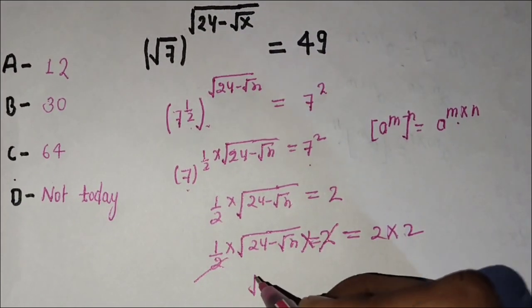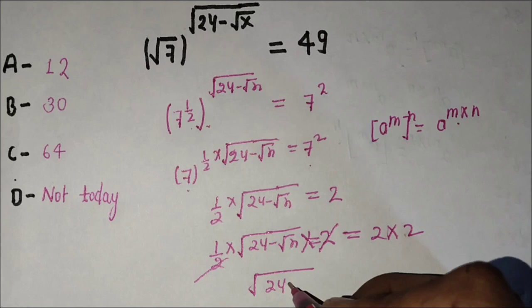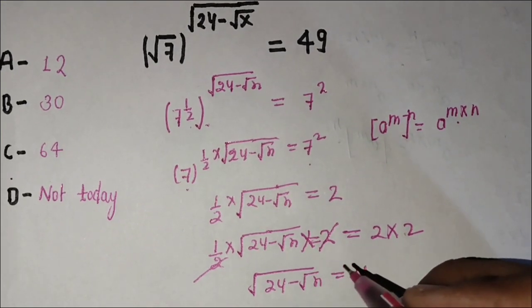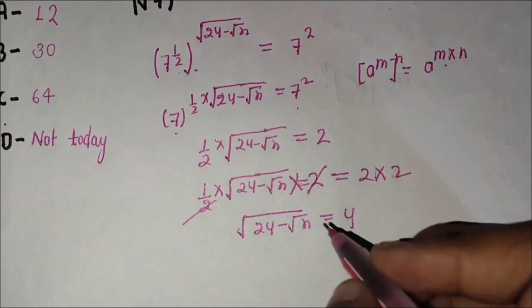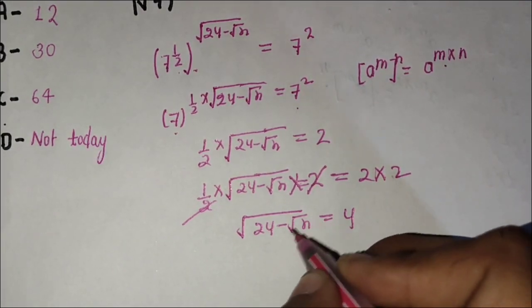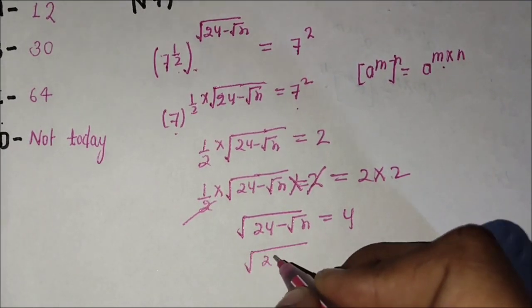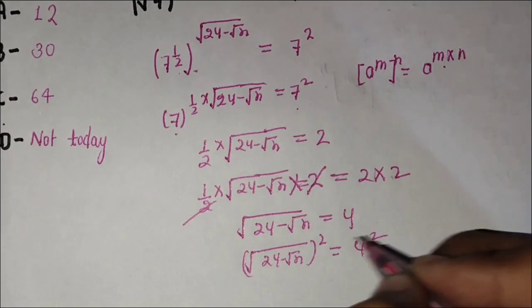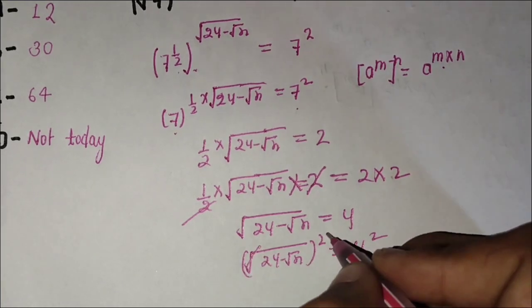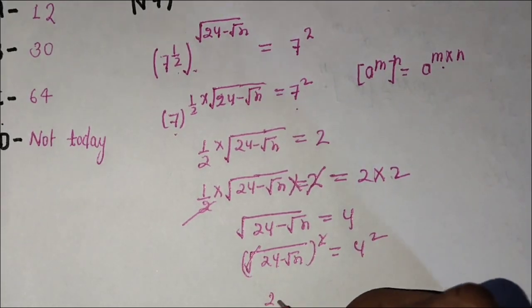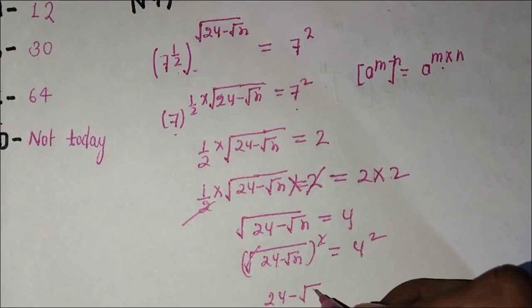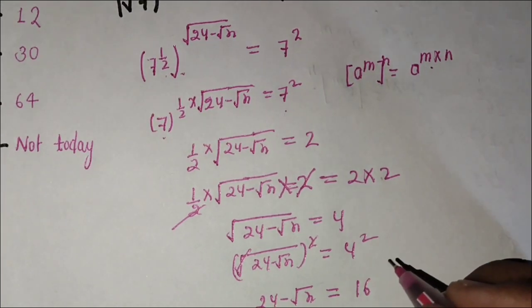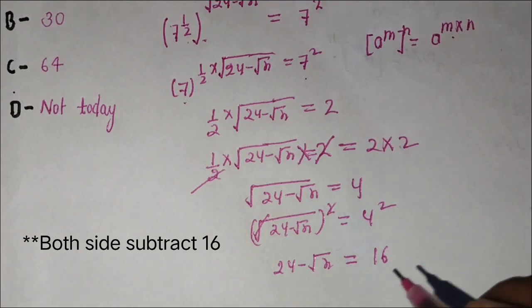Root of 24 minus root x equals 4. Now square both sides. The square and root cancel, giving us 24 minus root x equals 16.